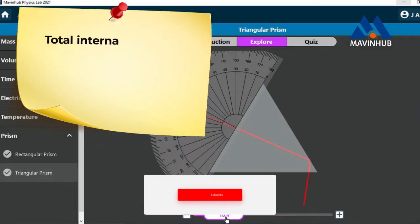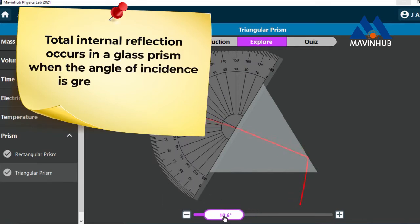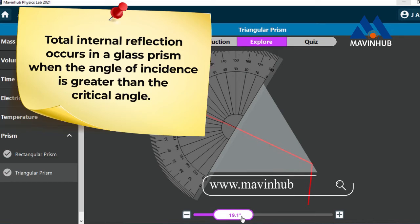Total internal reflection occurs in the glass prism when the angle of incident is greater than the critical angle. We can explore this virtually using Marvinov Physics Lab. We can download the app at www.marvinov.com.